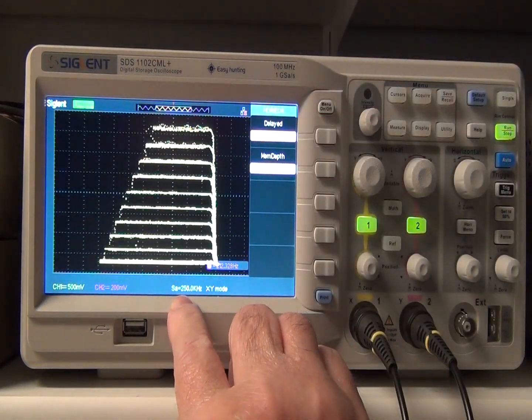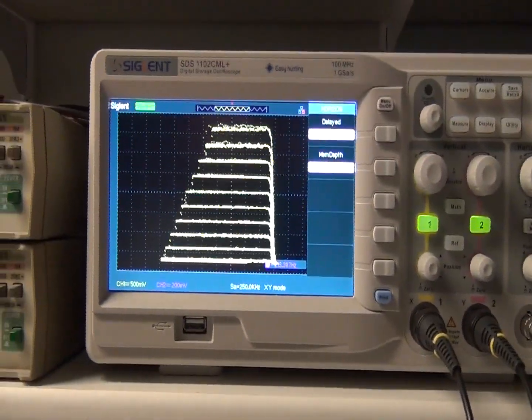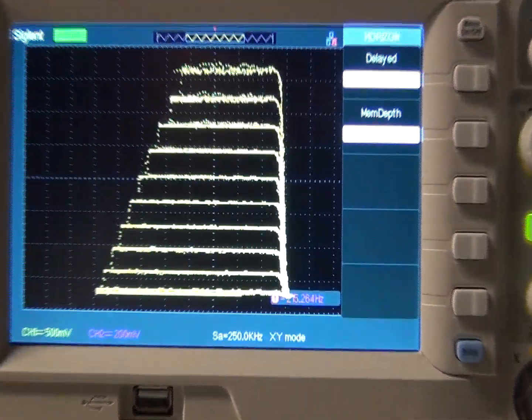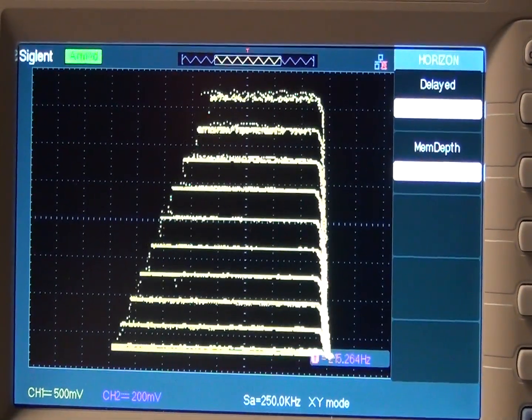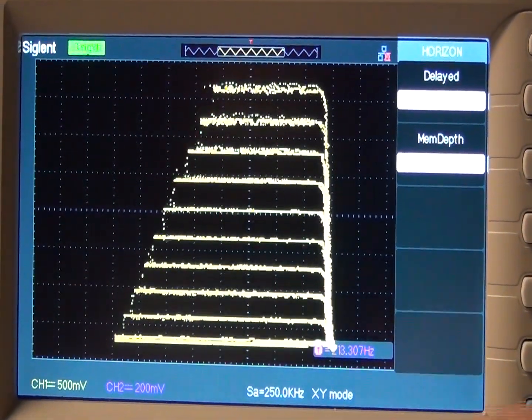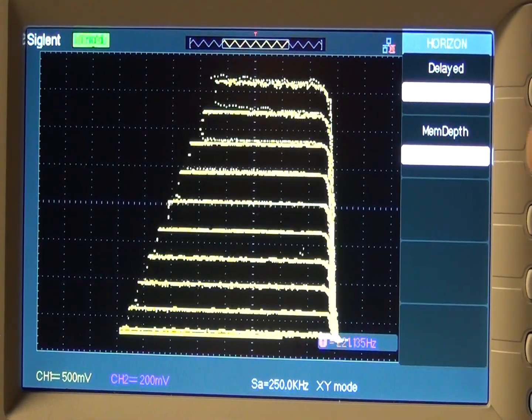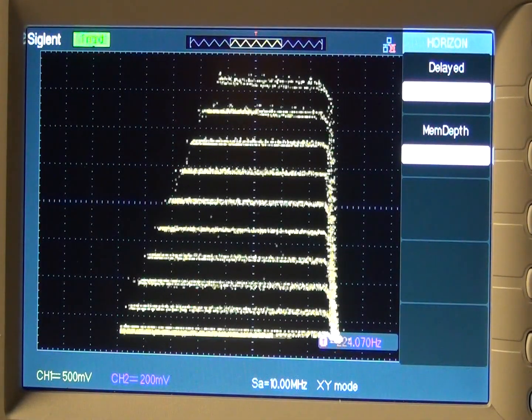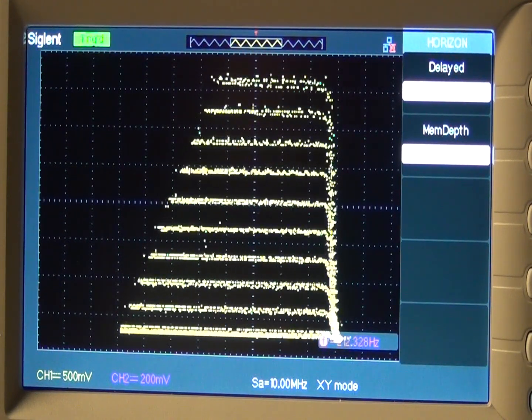See, right here I'm at 250 kilohertz. Let me get in on this a little bit more. I'm going to adjust this. Okay. So I'm at, the sampling is 250 kilohertz. If I go to long memory, now I've got 10 megahertz sampling.